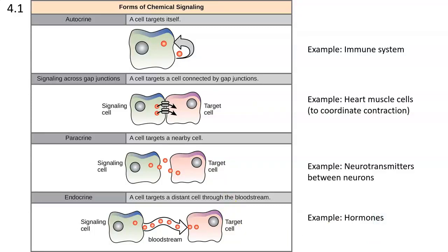The four different types of cell signaling are: first, autocrine — 'auto' means self, so this is where a cell targets itself. The next is signaling across gap junctions, where cells are physically connected and the signal moves directly from one cell to the next.